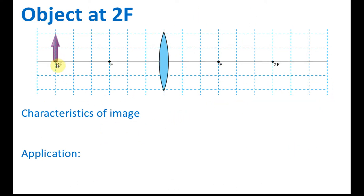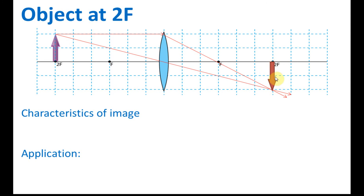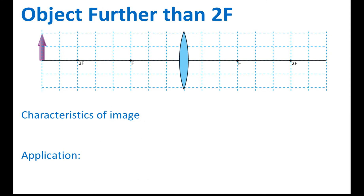What about putting the object exactly at 2F? Drawing one ray parallel to the principal axis passing through F, and another through O not refracted, we find the image also forms at 2F. The size of the object and image is the same — same size. It is real because it is on the other side, and it is inverted. This is used in a photocopy machine.